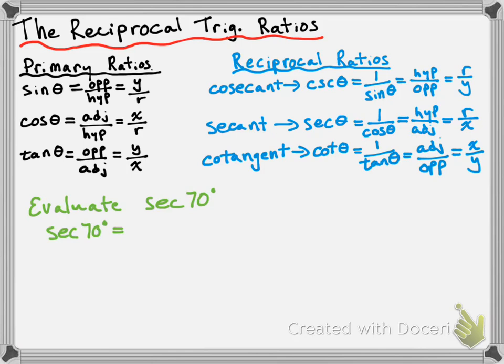So the secant of 70 degrees is going to be 1 over the cosine of 70 degrees. Cosine of 70 degrees is something you can actually do in your calculator — if you press cosine of 70, that'll give you a value. So we want to do 1 divided by cosine of 70 degrees, and we get approximately 2.9. That's how you evaluate a reciprocal ratio if you have the angle.